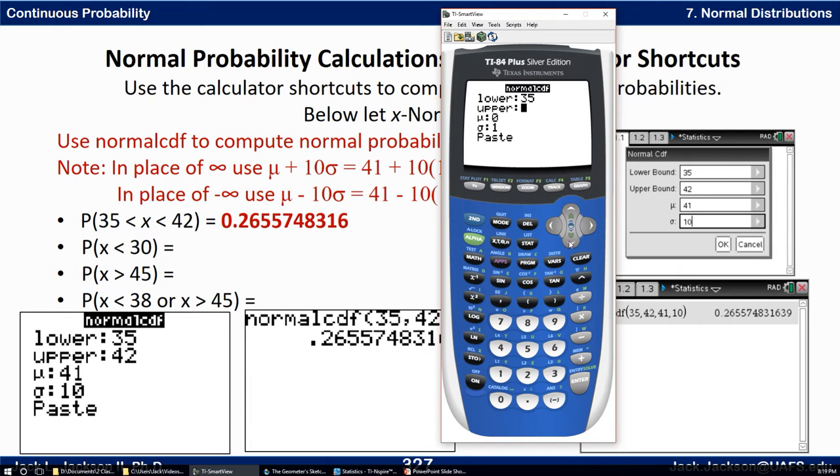We go 35 for lower, upper is 42, mean is 41, standard deviation is 10 and hit paste. If you don't get that screen and you just get normalcdf, you have to put them in this order: 35, 42, 41, 10 and hit enter and there's the answer right there. Just that easy.